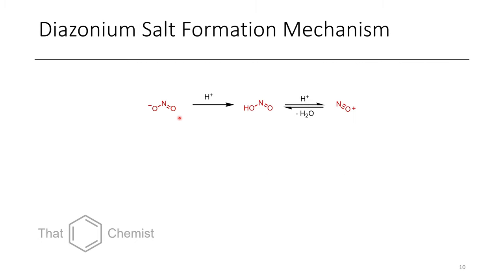So the way that this reaction happens is first, nitrite is treated with an acid, which forms nitrous acid, which can then be further protonated and dehydrated to create the nitrosonium cation.